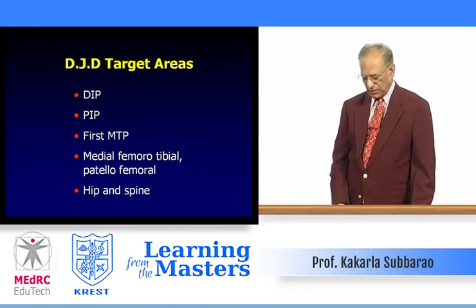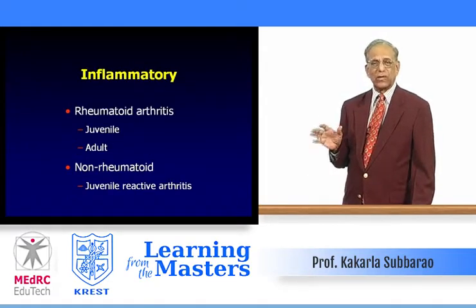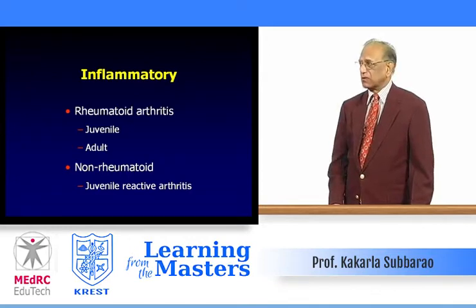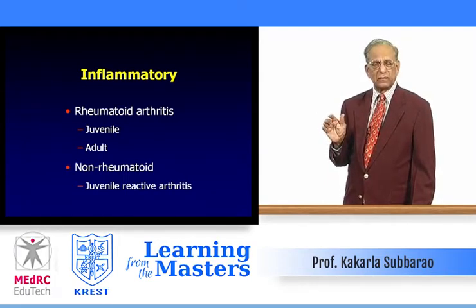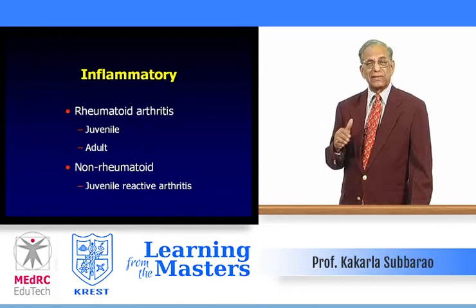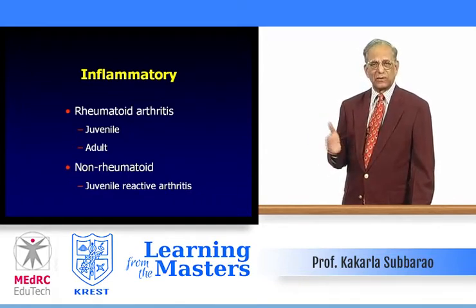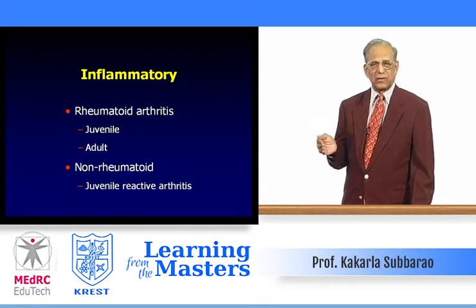For inflammatory arthritis — again the hands: first metacarpophalangeal joints, then proximal interphalangeal joints, and rarely the distal interphalangeal joints. The same applies to juvenile inflammatory arthritis, which is generally bilateral and symmetrical. For non-rheumatoid juvenile reactive arthritis, the cause is not fully known — chronic infection such as sinusitis has been implicated. These patients may develop juvenile reactive arthritis with erosion and sometimes sclerosis later on.